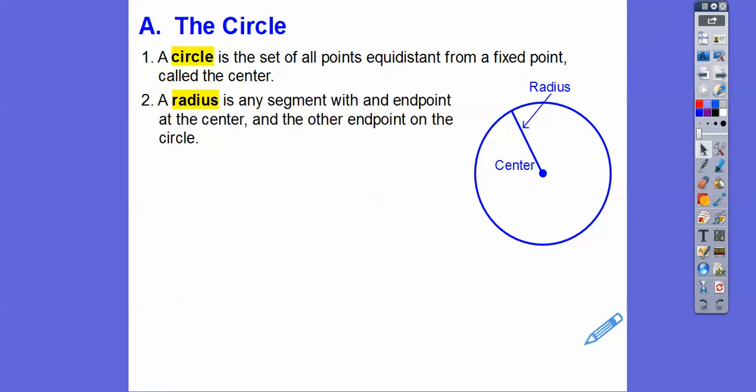So a radius is any segment that has an end point at the center. And you've probably seen this before here. So at the center and the other end point is on the circle right there. So that's a radius.